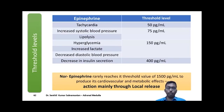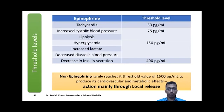The actions of catecholamines require particular threshold levels. For tachycardia, epinephrine must reach 50 picogram per ml. To increase systolic blood pressure and lipolysis, 75 picogram per ml is required. To cause hyperglycemia, increased lactate, or elevated diastolic blood pressure, 150 picogram per ml is required. Norepinephrine rarely reaches its threshold of 1500 picogram per ml to produce cardiovascular and metabolic effects. Hence, the physiological actions of norepinephrine are mainly through local release as a neurotransmitter from postganglionic sympathetic neurons.